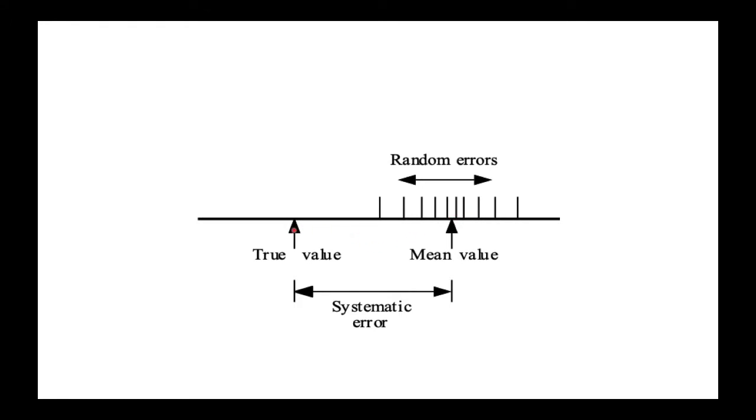On the other hand, all the points could be systematically off to one side. For example, let's say this is the true value, but all the points are scattered around this value instead. That is a systematic error.